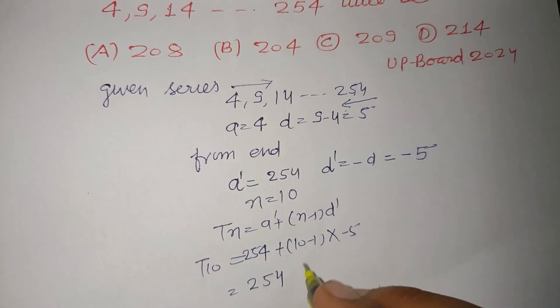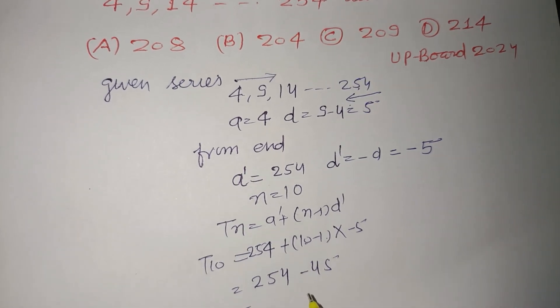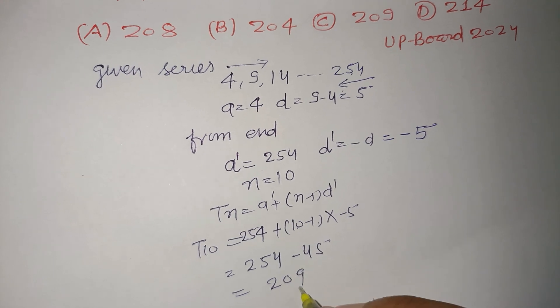So this is 254, 10 minus 1 is 9, 9 times 5 is 45, and on subtraction we get 209.